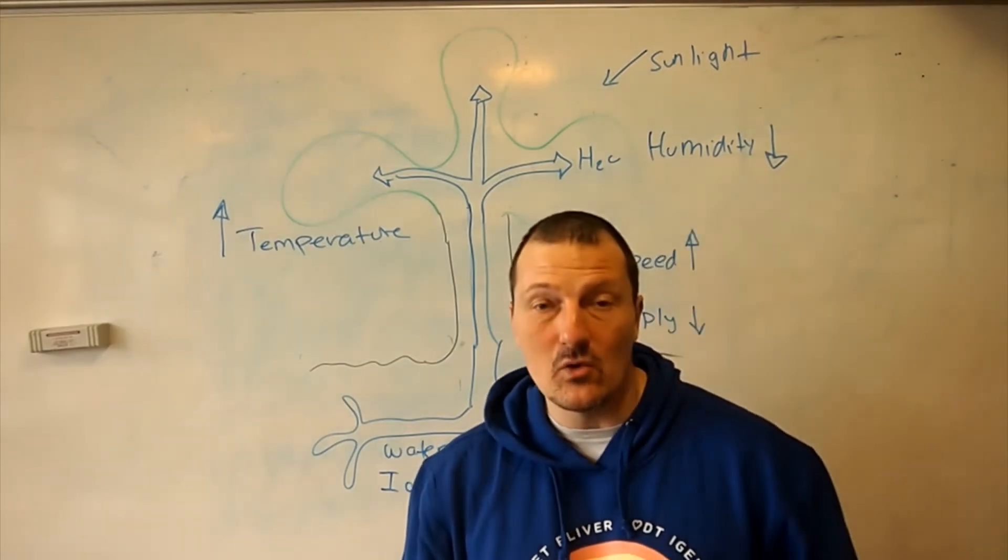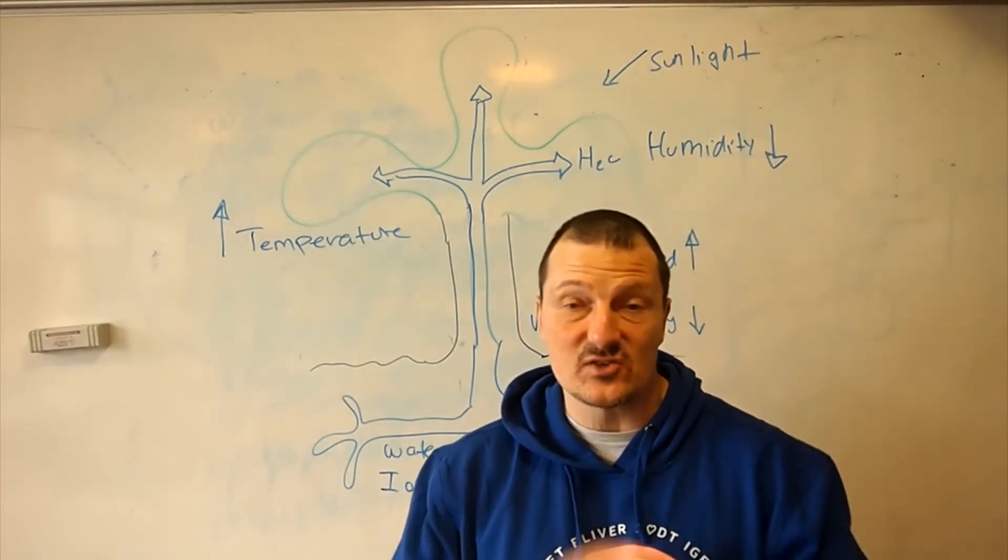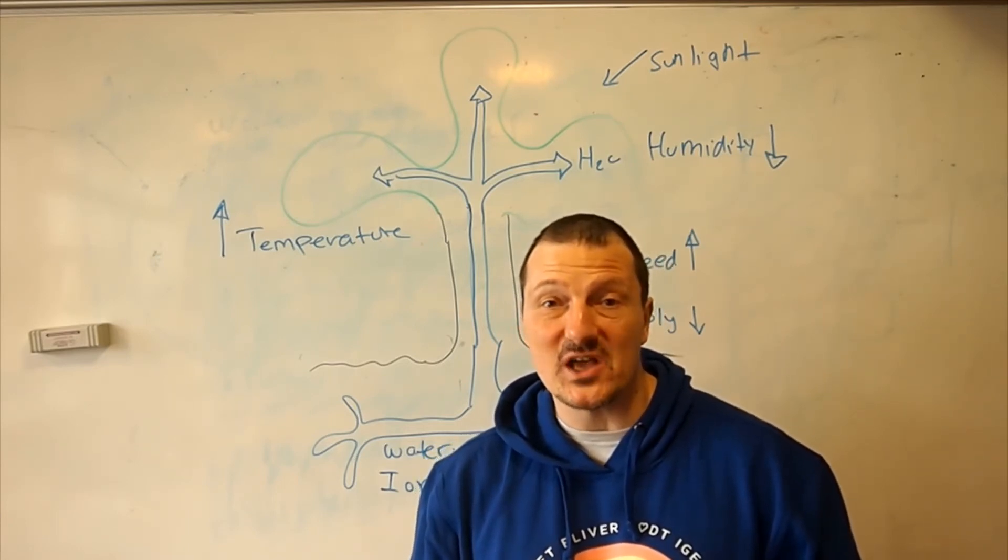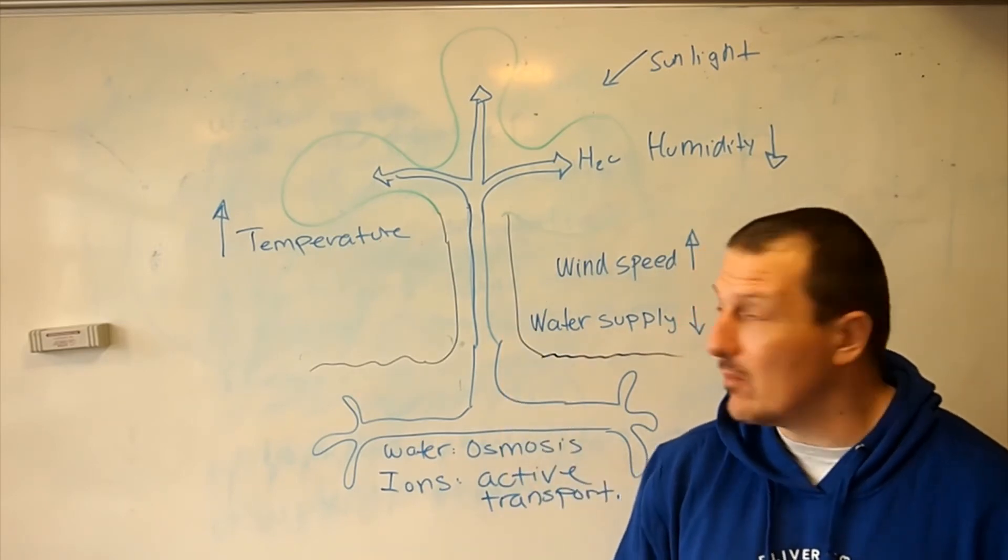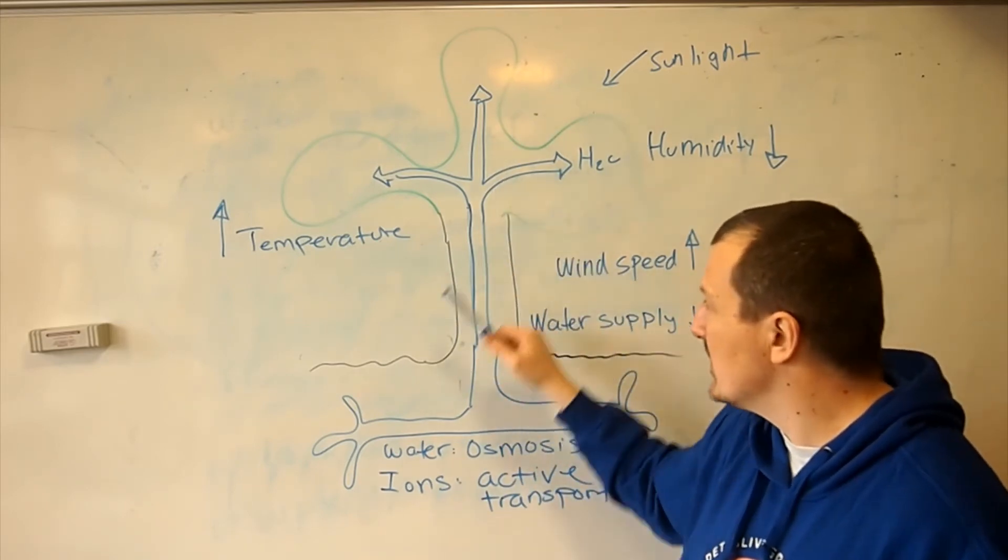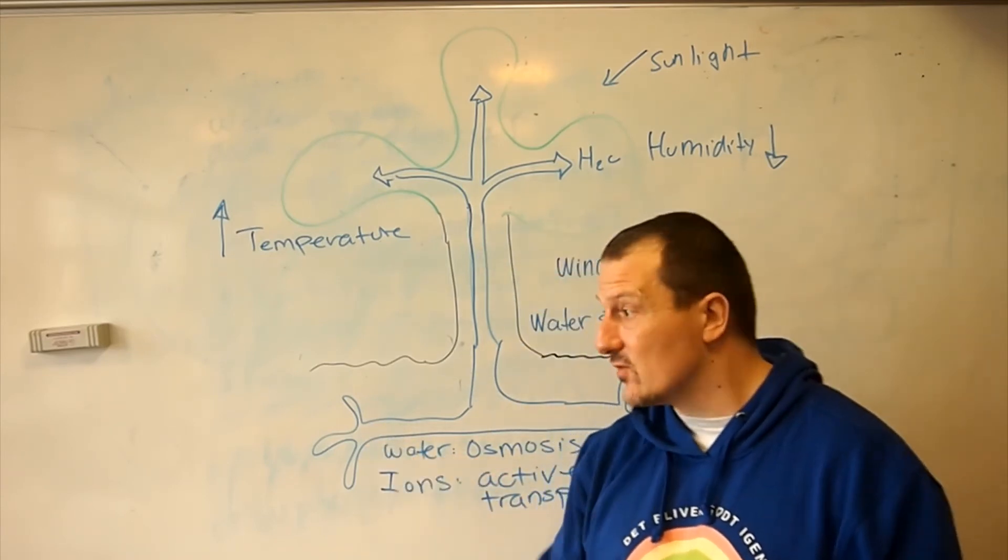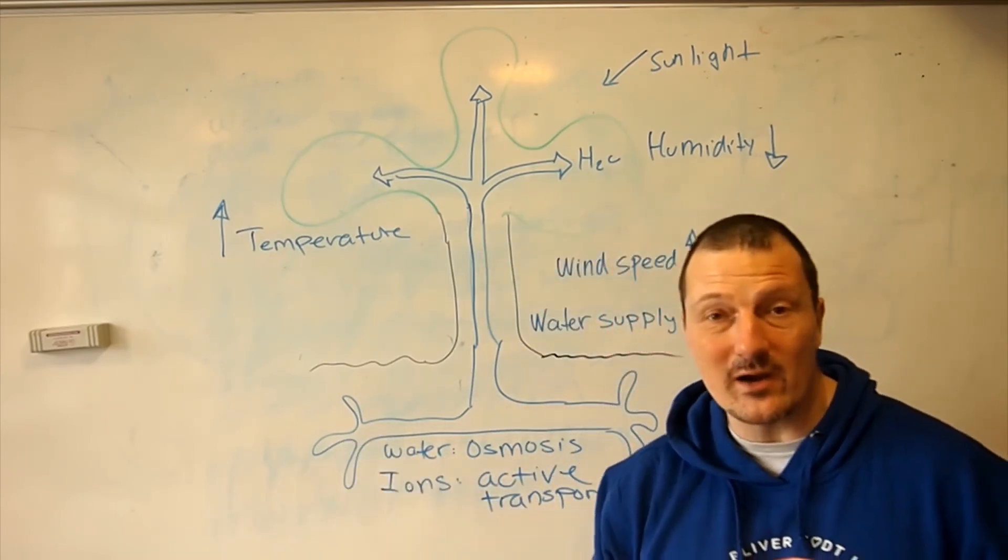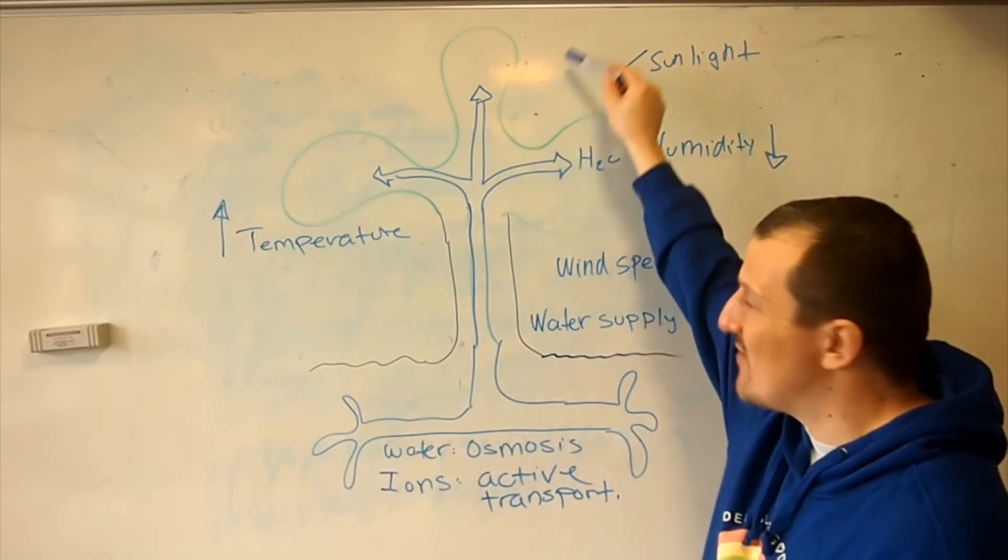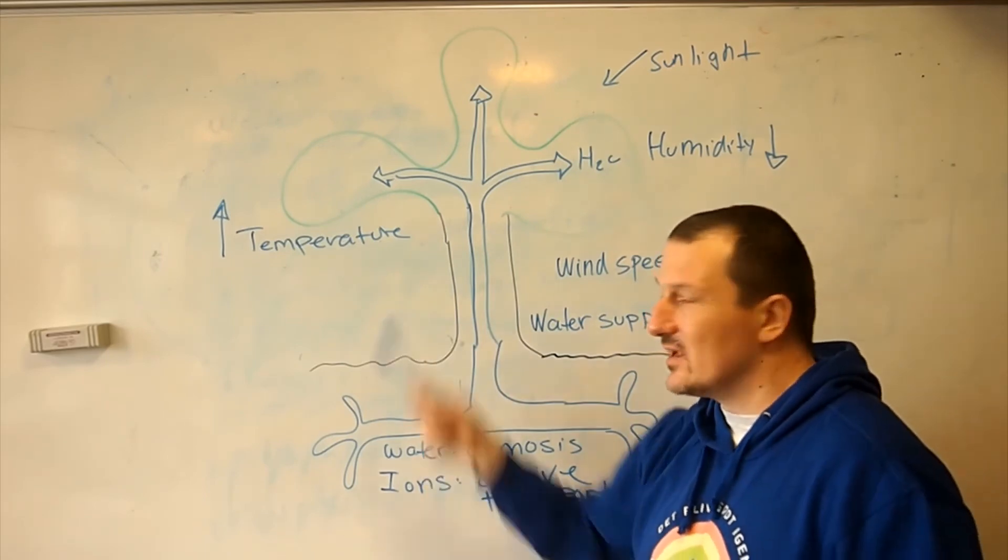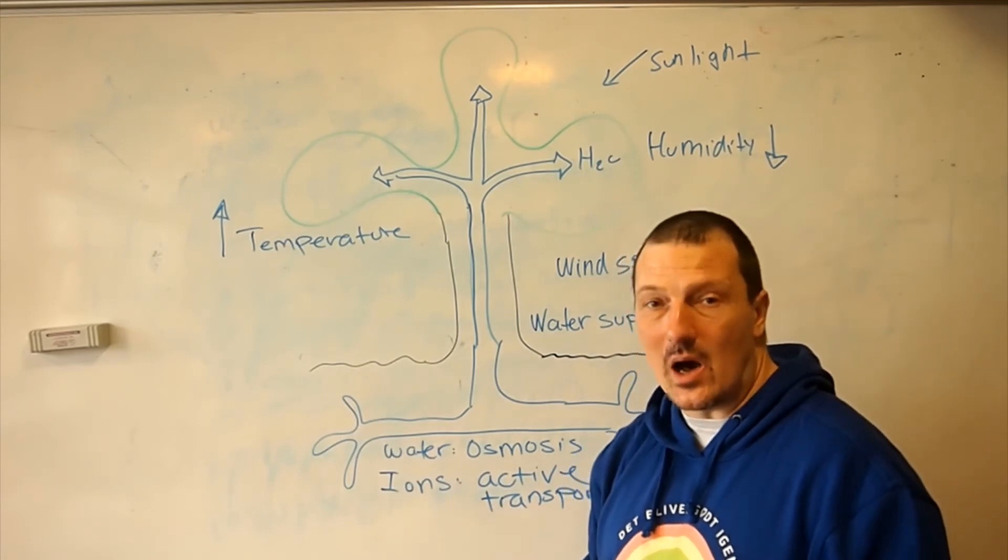So let's have a look at how different environmental factors will affect the transpiration rate and thereby the water uptake of the plants. Here I have a badly drawn model of the plant. We have the leaves up here, we have the stem, the xylem here, and we have the root with the root hairs here. Of course, water enters over the root hair, moves into the cortex, moves into the xylem, moves up into the leaves where it evaporates out, going from a high to low water potential.